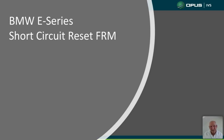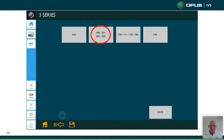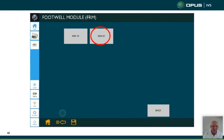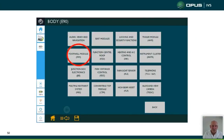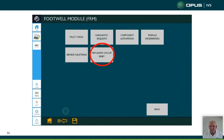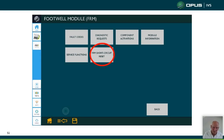At Autologic Opus IBS we made this software available on E-series vehicles early on. Using an E90 as an example: go to Body, then Footwell Module, and you'll find FRM Short Circuit Reset. This will only clear and stay cleared if you have fixed the underlying fault — if the fault isn't fixed, it will re-register after subsequent ignition cycles. This is a great feature as it saves you from having to replace an expensive module.